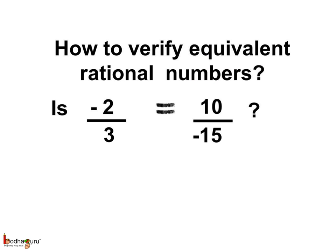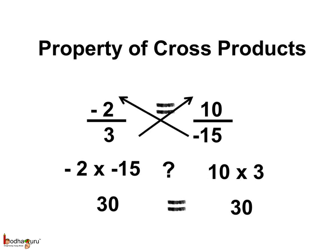How do we verify equivalent rational numbers? For example, is minus 2 by 3 equal to 10 by minus 15? We can use the property of cross products or cross multiplication. Check if the product of the numerator of the first and the denominator of the second equals the product of the denominator of the first and the numerator of the second — hence the name, property of cross products. So, minus 2 multiplied by minus 15 should equal 10 multiplied by 3. Minus 2 multiplied by minus 15 is 30, and 10 multiplied by 3 is 30. Since 30 equals 30, we can say minus 2 by 3 and 10 by minus 15 are equivalent rational numbers.